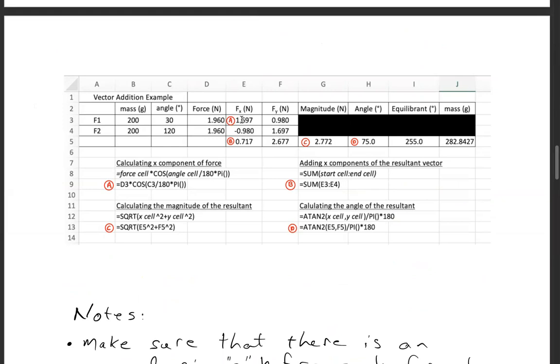To calculate the x component, you can see the equation at A. You basically take the force cell, which is D3, times the cosine of the angle divided by 180 times pi. The 180 times pi is necessary to convert from degrees to radians.